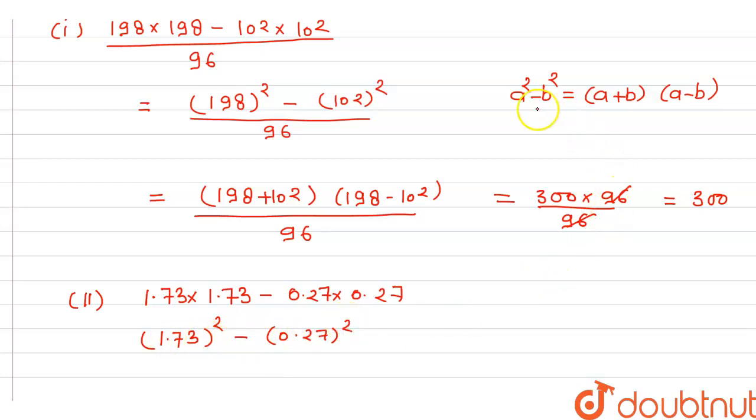So this is nothing but the form of a square minus b square. So the expanded form of this is a plus b and a minus b. So we will write that 1.73 plus 0.27 in one bracket and another bracket it will be 1.73 minus 0.27.